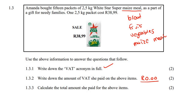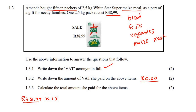Then this last question says: calculate the total amount that she paid for the above items. She bought 15 packets, and each packet is that amount over there. So you're just going to say 38.99 multiplied by 15. You could also say 38.99 plus 38.99 plus 38.99 — how many times? 15 times. That is what multiplication actually means: this number, how many times? 15.